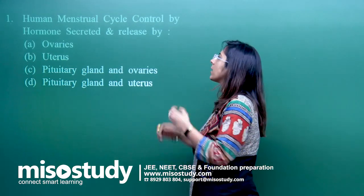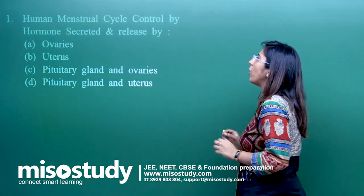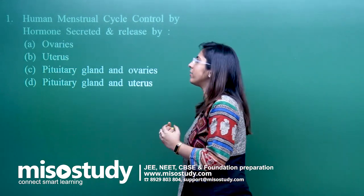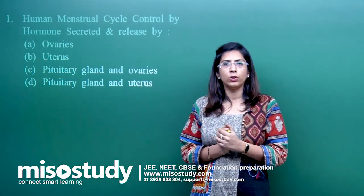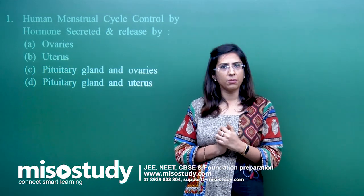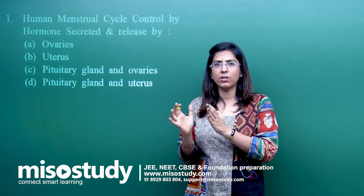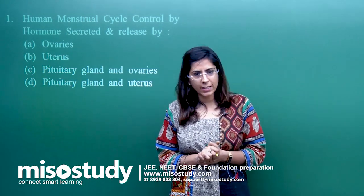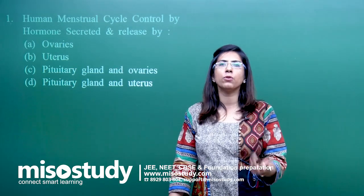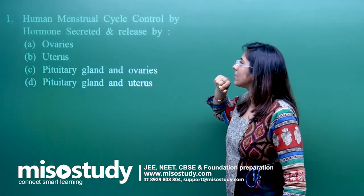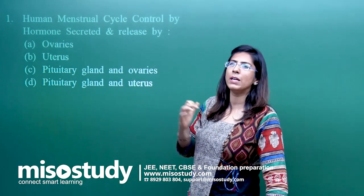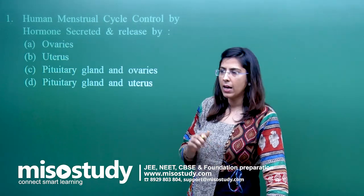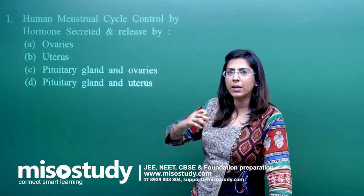The first question: the human menstrual cycle is controlled by the hormones secreted and released by? The whole process of menstruation — the menstrual cycle — has a duration of 28 days, in which there is a secretory phase, a maturation phase, and a menstruation phase. There are certain structures which help in maintaining the endometrium, and after that there is breakdown of the endometrium.